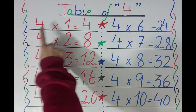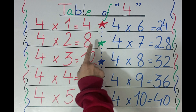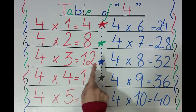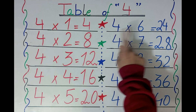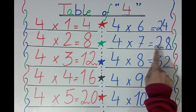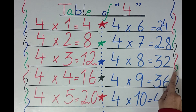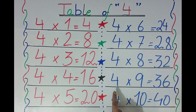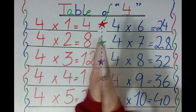So, four ones are four. Four twos are eight. Four five's are twenty. Four six's are twenty-four. Four seven's are twenty-eight. Four eight's are thirty-two. Four nine's are thirty-six. Four ten's are forty. Yay!